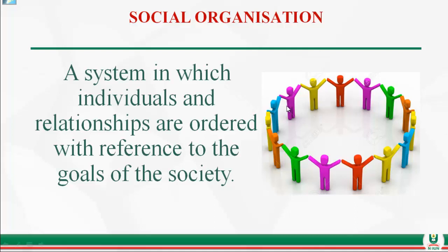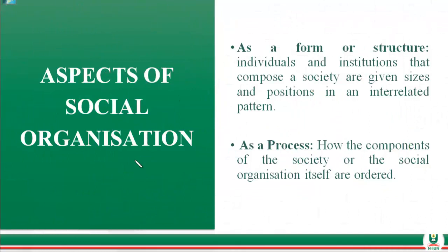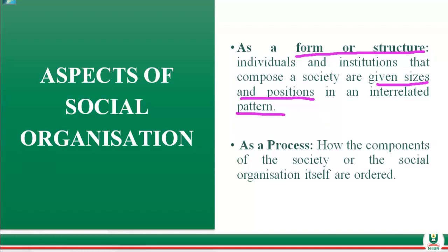Let's look at the aspects of social organization. The first aspect is that it is a form of structure — individuals and institutions that compose a society are given sizes and positions. For example, we have students and lecturers, workers and bosses, leaders and followers, all in an interrelated pattern.